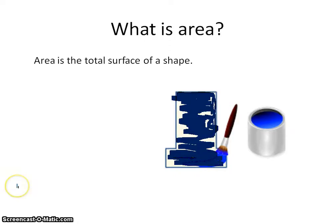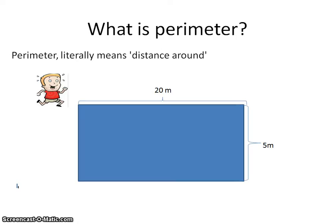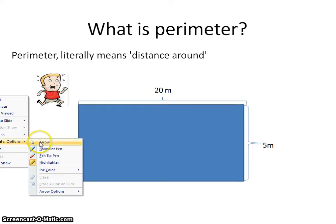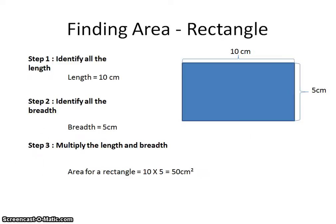Now let's go to perimeter. Perimeter literally means the distance around a shape. For example, Tim wants to run around this rectangle. He would run 20 meters, followed by 5 meters, then another 20 meters, and then another 5 meters — so he would have run a total of 50 meters, and that will be the perimeter.